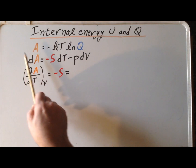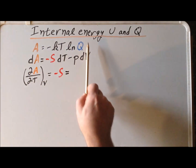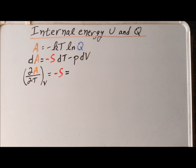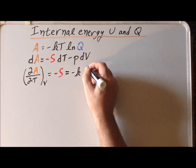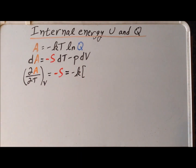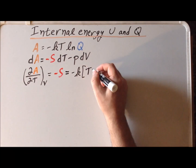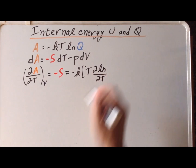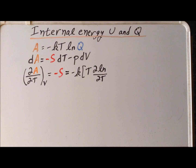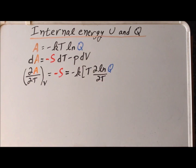But now we can also find the derivative with respect to the temperature by differentiating the above expression. And if we do that, we get that it's equal to minus k — pulling the constant out in front — times the temperature, times the derivative of the natural log of the canonical ensemble partition function Q.